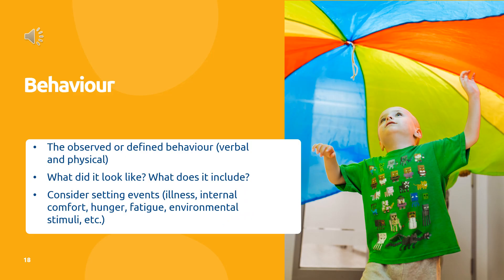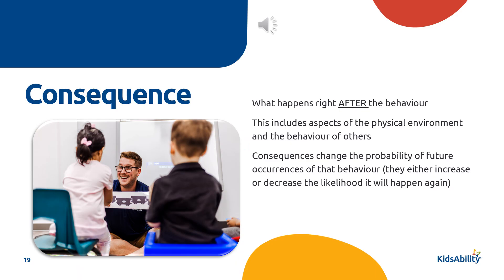When defining behavior, we want to look at both physical and verbal components — what does it look like and what does it include? The consequence of a behavior is simply what happens immediately after the behavior occurred. Similar to the antecedent, it can include aspects of the physical environment as well as the behavior of others, and it doesn't have to be negative. Consequences influence the chance that a behavior will happen again in the future. Depending on how we respond, we can increase or decrease its probability.